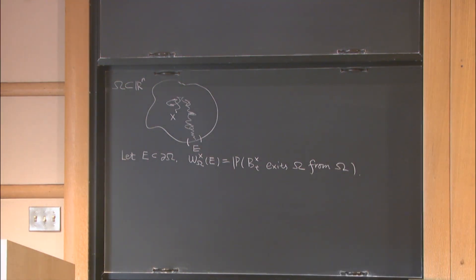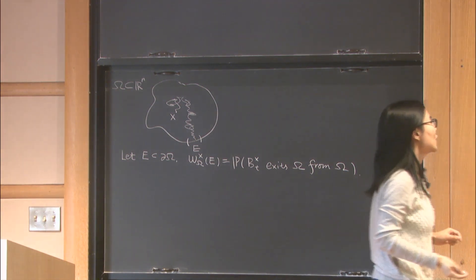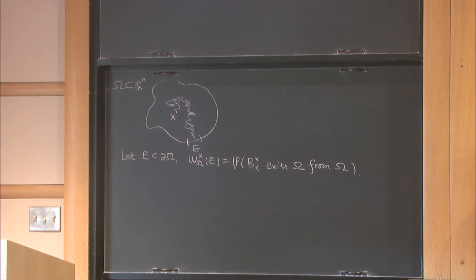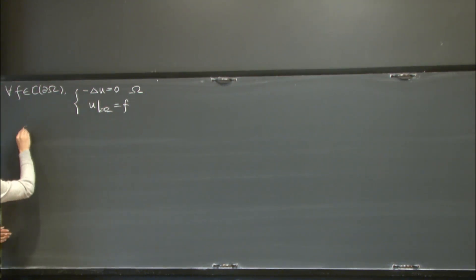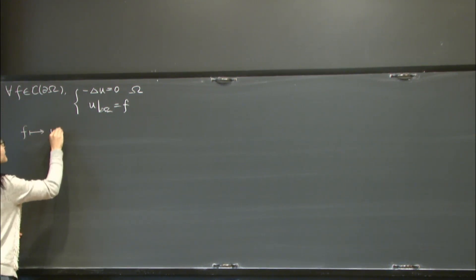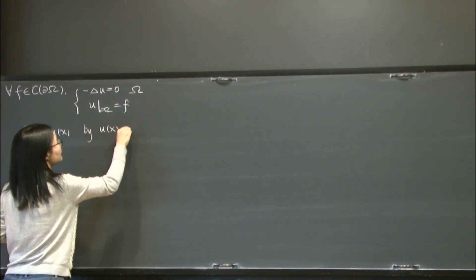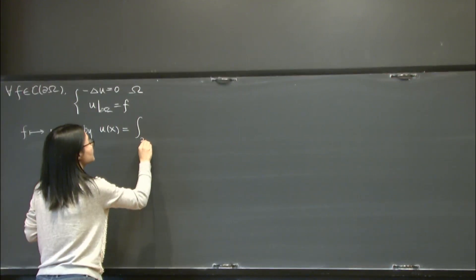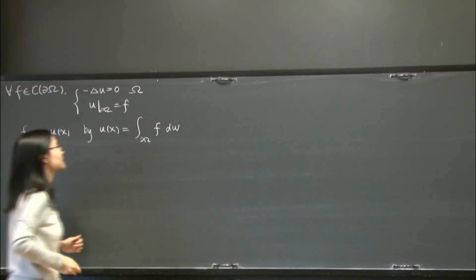We can also define harmonic measure from an analytic point of view, which is how I prefer to study it. For any continuous function f on the boundary, we look at the elliptic equation — specifically the Laplacian — inside Ω with prescribed boundary value f. The harmonic measure associates the boundary function with the value of the solution. By a representation formula, u(x) is the integral of the boundary function f against the harmonic measure.